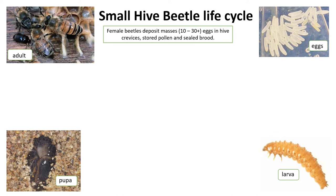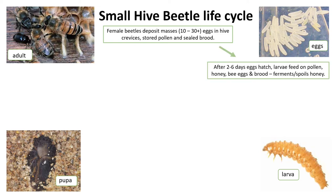The life cycle of a Small Hive Beetle starts when an adult female beetle invades a colony and she will lay a large number of eggs in crevices within the hive and on stored pollen and sealed brood. The eggs are pearly white and about 1.5 by 0.25 millimetres, which is two-thirds the size of a honey bee egg. Each female beetle is capable of laying between one thousand and two thousand eggs during her lifetime, so it takes relatively few beetles to produce a severe infestation. After two to six days these eggs will hatch and the larvae feed on pollen, honey, bee eggs and brood.